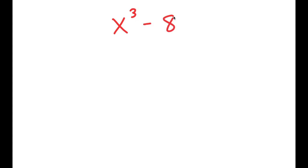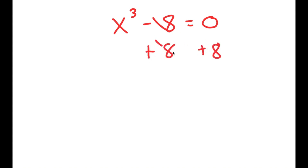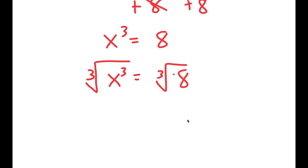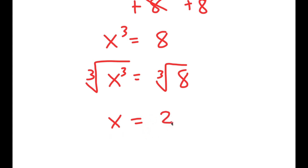In this video I'm going to solve the equation x to the power of 3 minus 8 is equal to 0. The way most people solve this is by adding 8 on both sides to get x to the power of 3 equals 8, then taking the cube root on both sides. The cube root of x cubed is x, and the cube root of 8 is 2, so they get x equals 2, which is a solution to this equation.